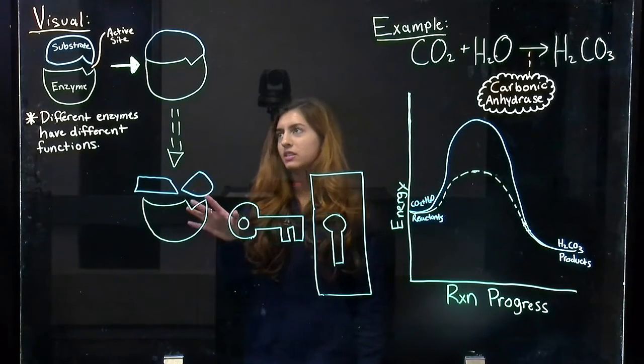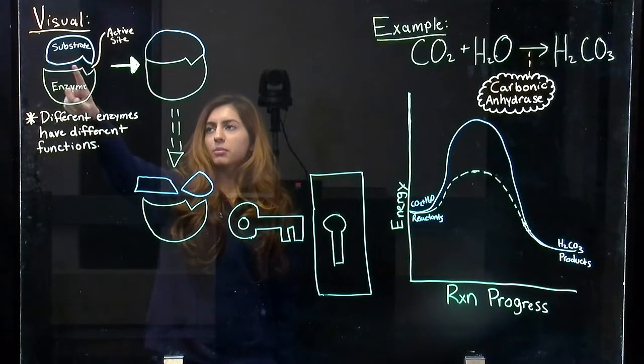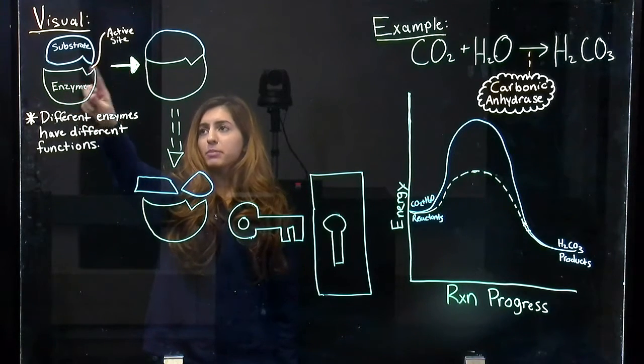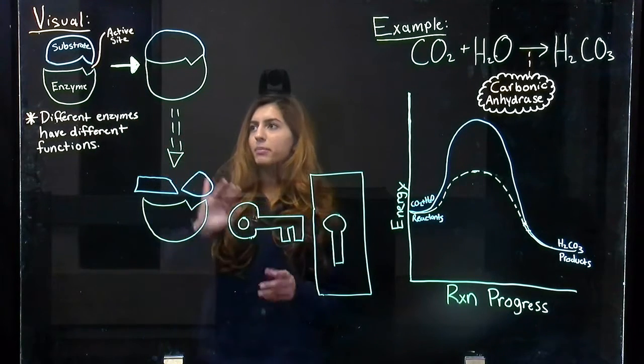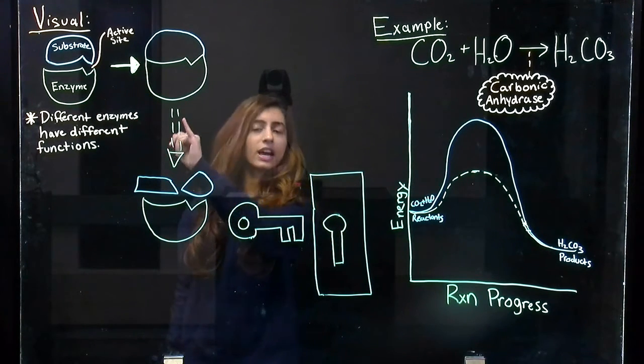A way to visualize the function of enzymes is by this model over here. So we have the substrate and the enzyme. And the space in between where the substrate will bind to the enzyme is the active site. And you can see that the shape of the enzyme fits the substrate perfectly, kind of like a jigsaw puzzle.